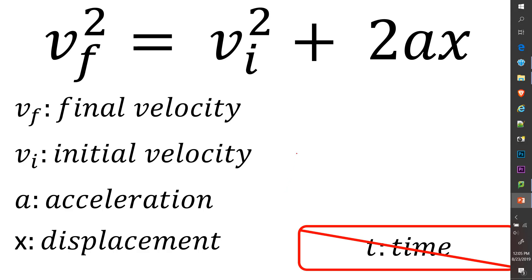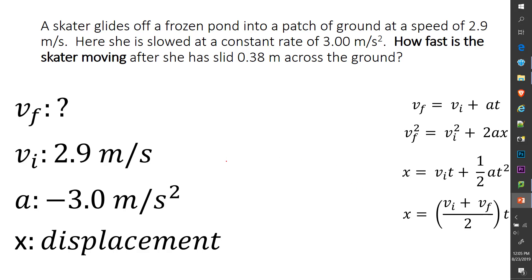The variables here mean VF is final velocity, VI is initial velocity, A is acceleration, and X is displacement. What I don't have is time. This is going to be very important because this will help me pick my equation. I don't have time, I can't have time anywhere in the equation. And don't forget to have your unknown. So let's take a look at an example.